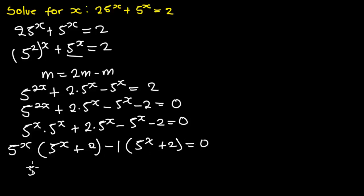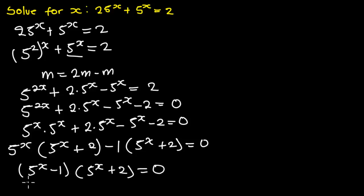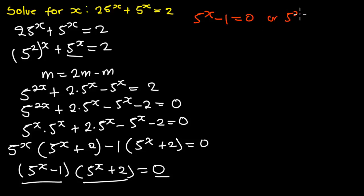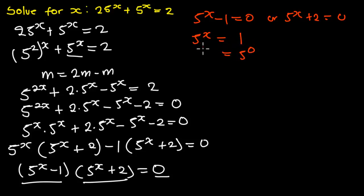So we have (5 exponent x minus 1) multiplying (5 exponent x plus 2) is equal to 0. Setting each factor to zero: 5 exponent x minus 1 equals 0, or 5 exponent x plus 2 equals 0. From the first equation, 5 exponent x equals 1, and we can rewrite 1 as 5 exponent 0, so equating exponents gives x equals 0.